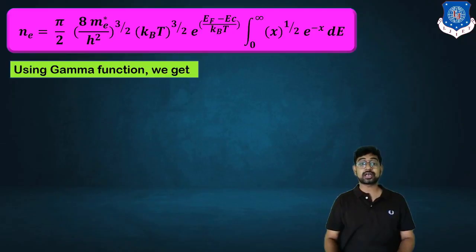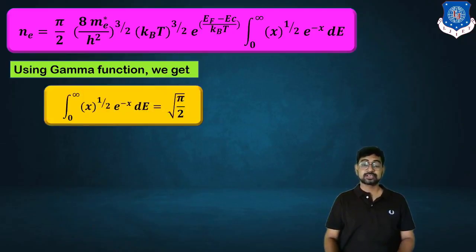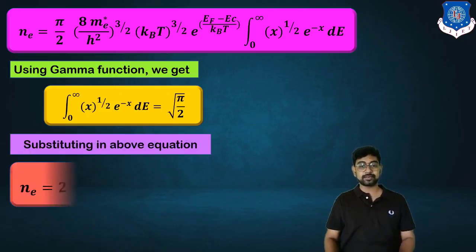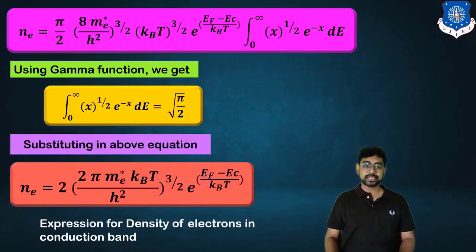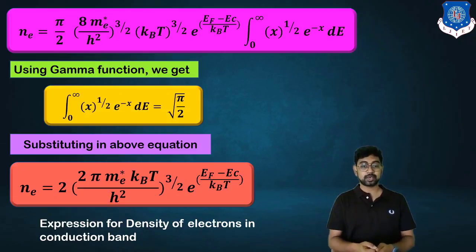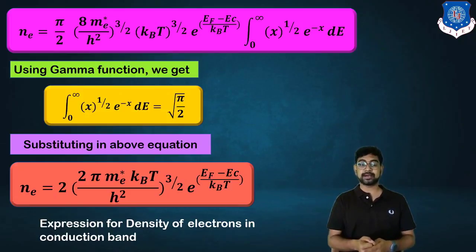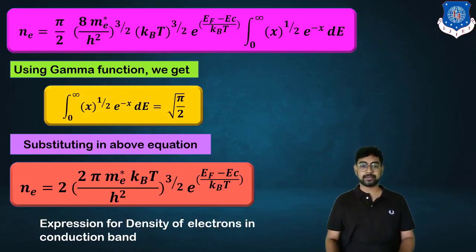This remaining integral is a gamma function, evaluated as Γ(3/2) = √π/2. After replacing and simplification, we get the final expression: n_e = 2·(2πm*_e·k_BT/h²)^(3/2)·e^((E_F−E_C)/k_BT). This is the expression for the density of electrons in the conduction band.